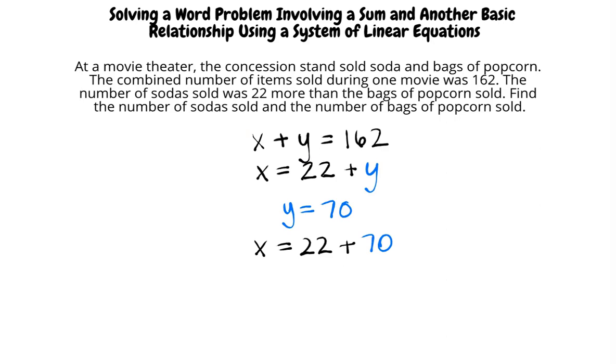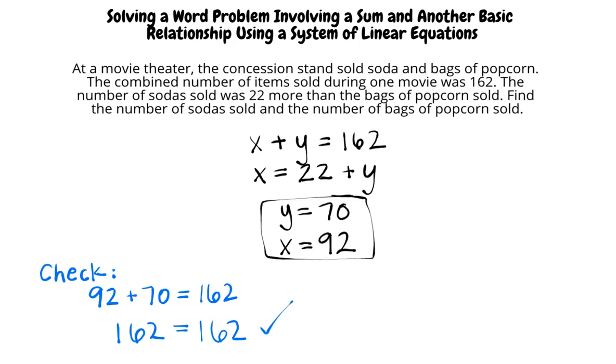Then use the second equation x equals 22 plus y and substitute 70 for y. We will have x equals 22 plus 70. This is equal to x equals 92. Let's check our work by going back to the original problem. We can see that 92 sodas and 70 bags of popcorn total 162 items. We can also see that 92 sodas and 70 bags of popcorn show that the number of sodas is 22 more than the number of bags of popcorn. We have solved the system of linear equations and determined that 92 sodas and 70 bags of popcorn were sold.